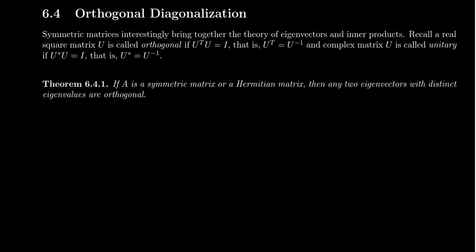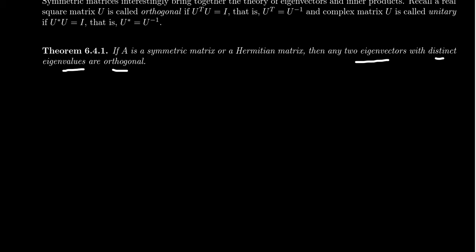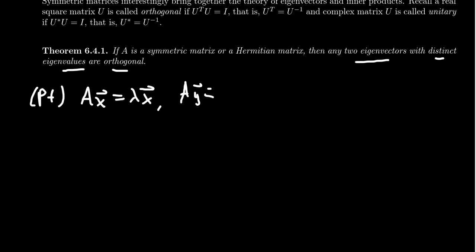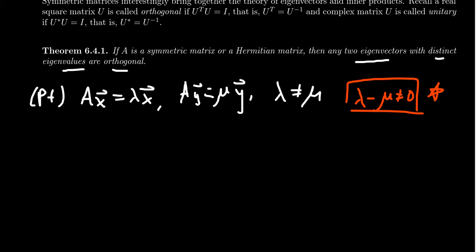For the sake of this proof, I will prove it for a symmetric matrix — if you switch from transposes to conjugate transposes, the proof is the same. We have two eigenvectors X and Y: X has the property AX equals lambda X, and Y has the property AY equals mu Y, where mu and lambda are different numbers. Since lambda and mu are not equal, lambda minus mu is not equal to zero — we'll come back to this in a moment.